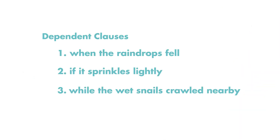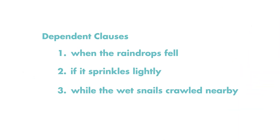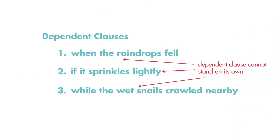A dependent clause cannot stand on its own. It does not tell a complete thought. Think about the word dependent as meaning depending on another. A dependent clause depends on another clause — an independent clause.